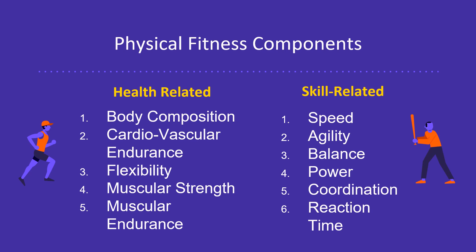These are the different physical fitness components. Under physical fitness, we have two branches: health-related and skill-related. Under health-related, we have body composition, cardiovascular endurance, flexibility, muscular strength, and muscular endurance. For skill-related, we have speed, agility, balance, power, coordination, and reaction time.